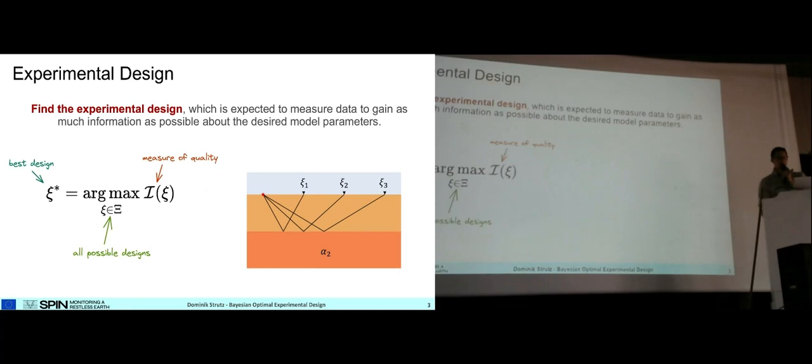So let's start with the first part: find the experimental design. Formally, we can express that as finding a design which maximizes some measure of quality. In the simplest case, we would just go through all of the designs, calculate the quality measure, and pick the best one.